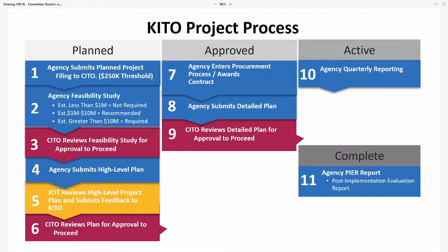Senator Dyson asked: when project plans are sent to JCIT, is silence treated as approval? Alex Wong clarified that the proviso gives a seven-day window — if no feedback is received, the process can move forward. A meeting must be convened if any feedback is received. The Chairman noted the proviso came after a bill didn't pass and has been working well, though members need to check email regularly.